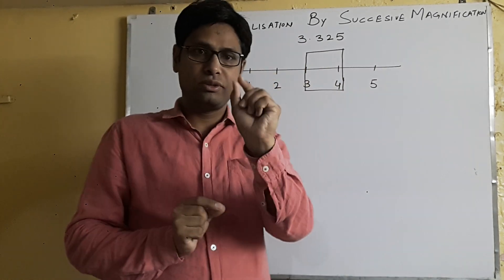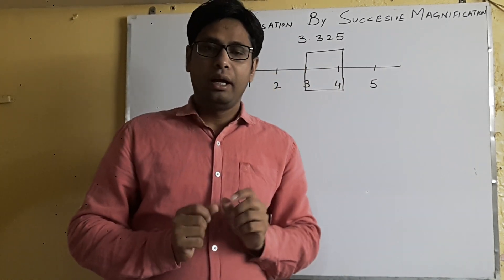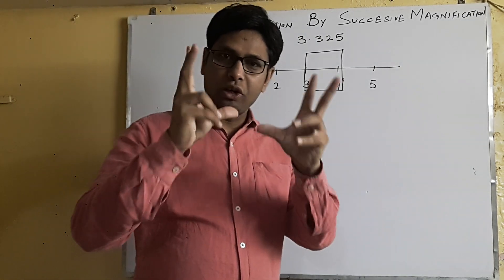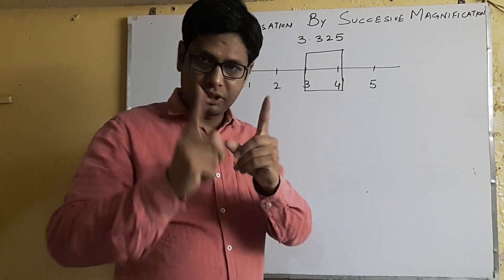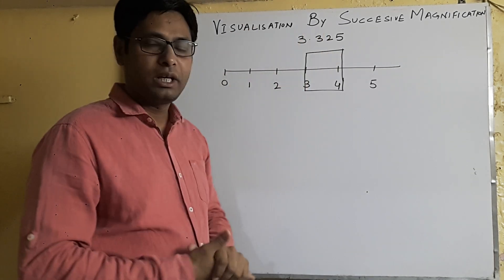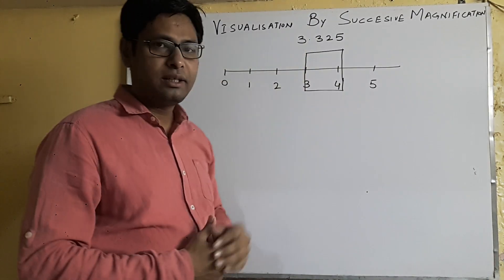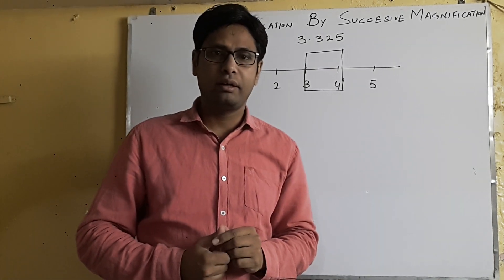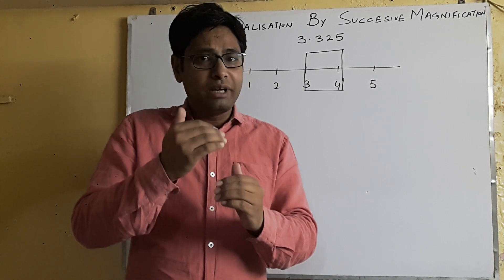Let's take an example. It is just like you are zooming on your mobile phone like I just told you. You can see that 3.325 - there is a point which I think is not visible to you. But now what we are going to do is use successive magnification here.